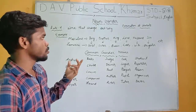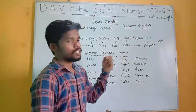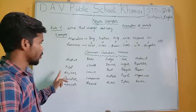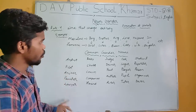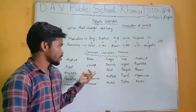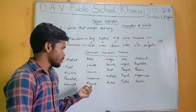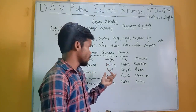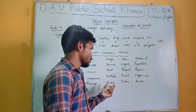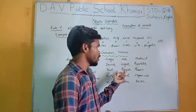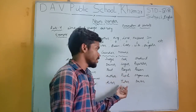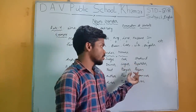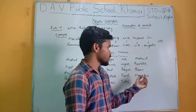There are some common gender nouns: artist, pilot, anchor, painter, lawyer, baby, child, cousin, companion, friend, judge, driver, poet, author, actor, cook, singer, player, pupil, tutor, student, reporter, person, organizer, doctor.